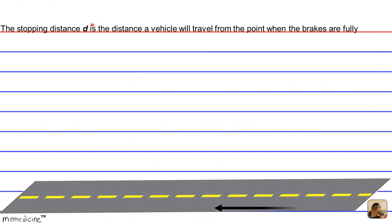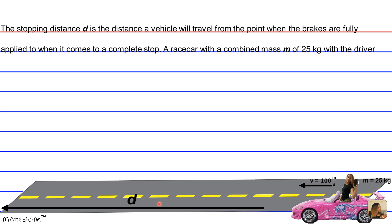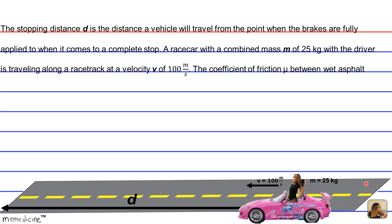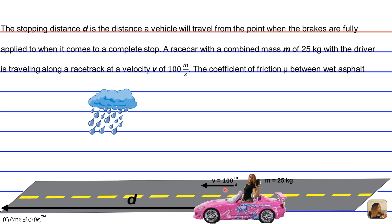The stopping distance d is the distance a vehicle will travel from the point when the brakes are fully applied to when it comes to a complete stop. A race car with a combined mass m of 25 kg with the driver is traveling along a racetrack at a velocity of 100 m/s.